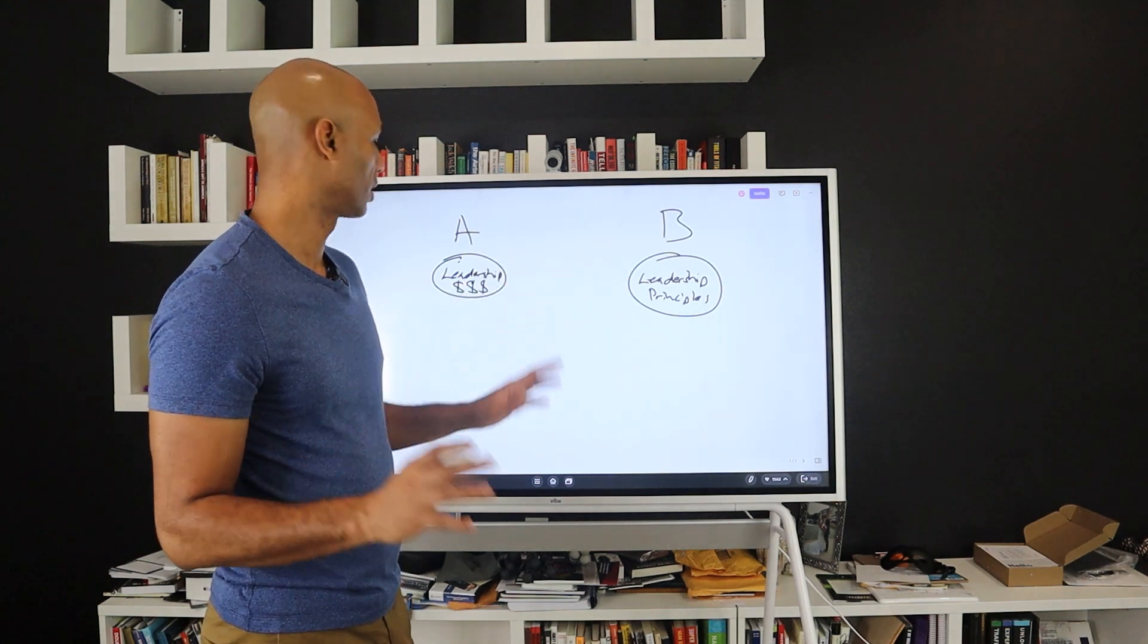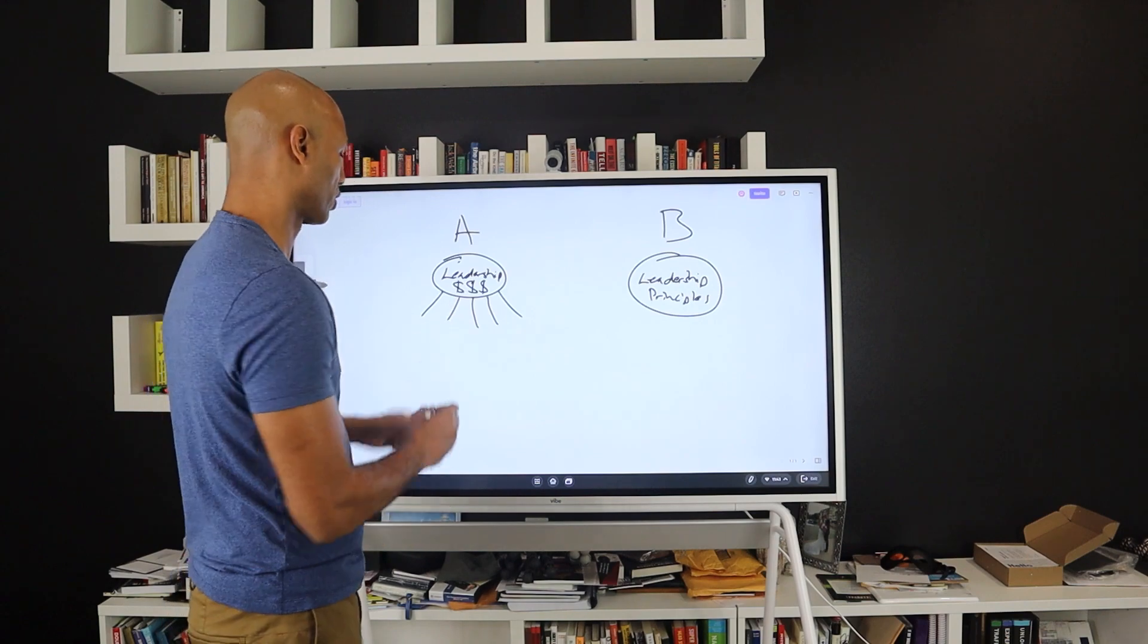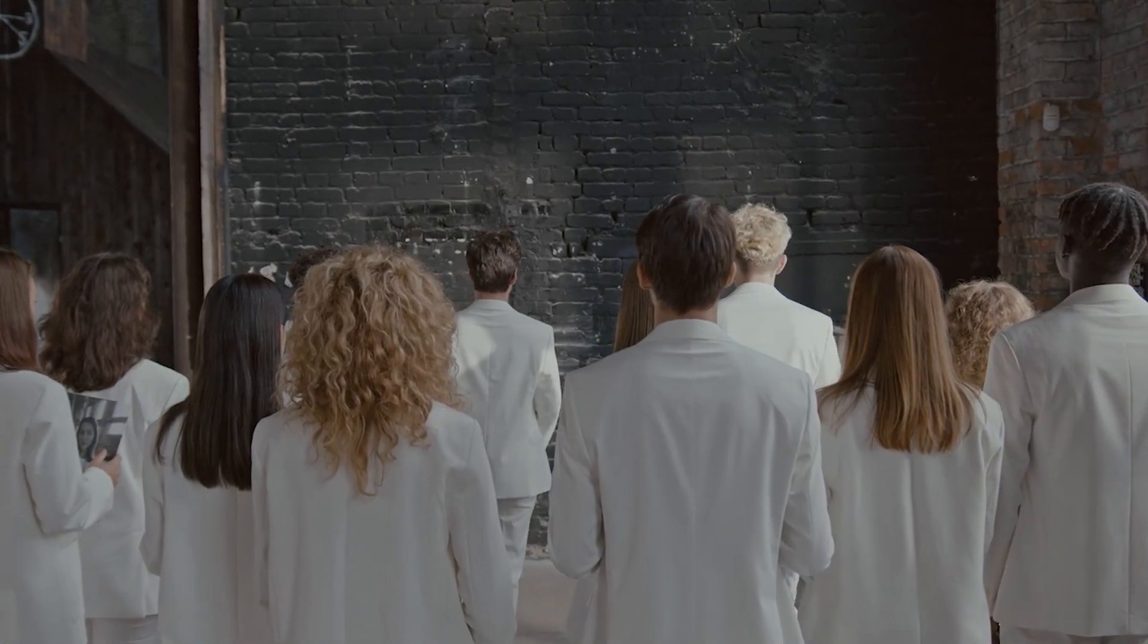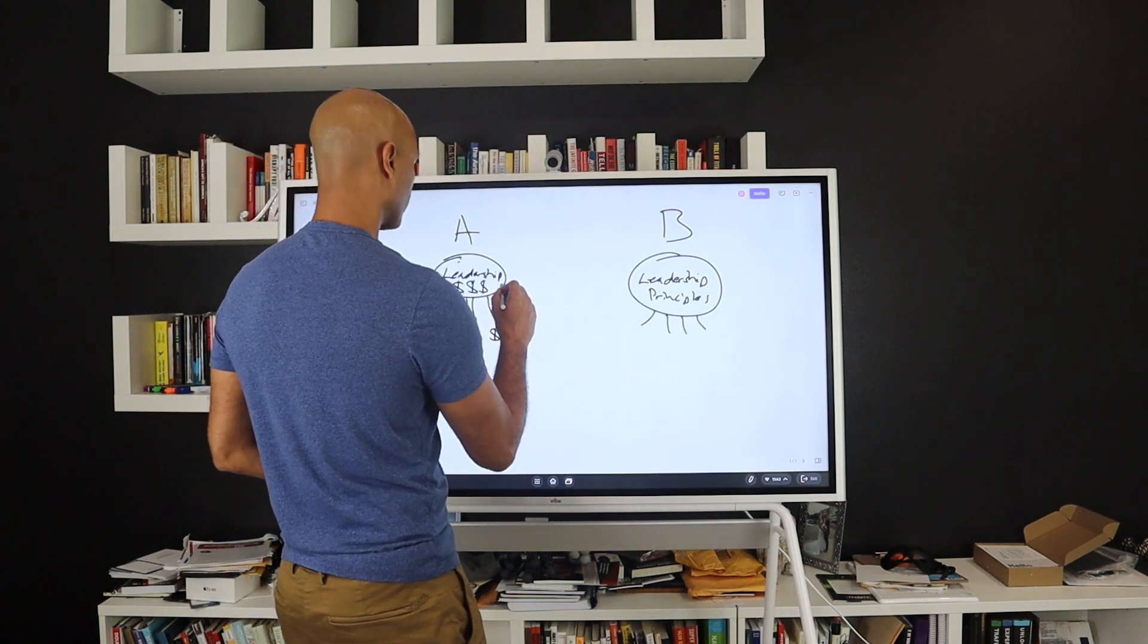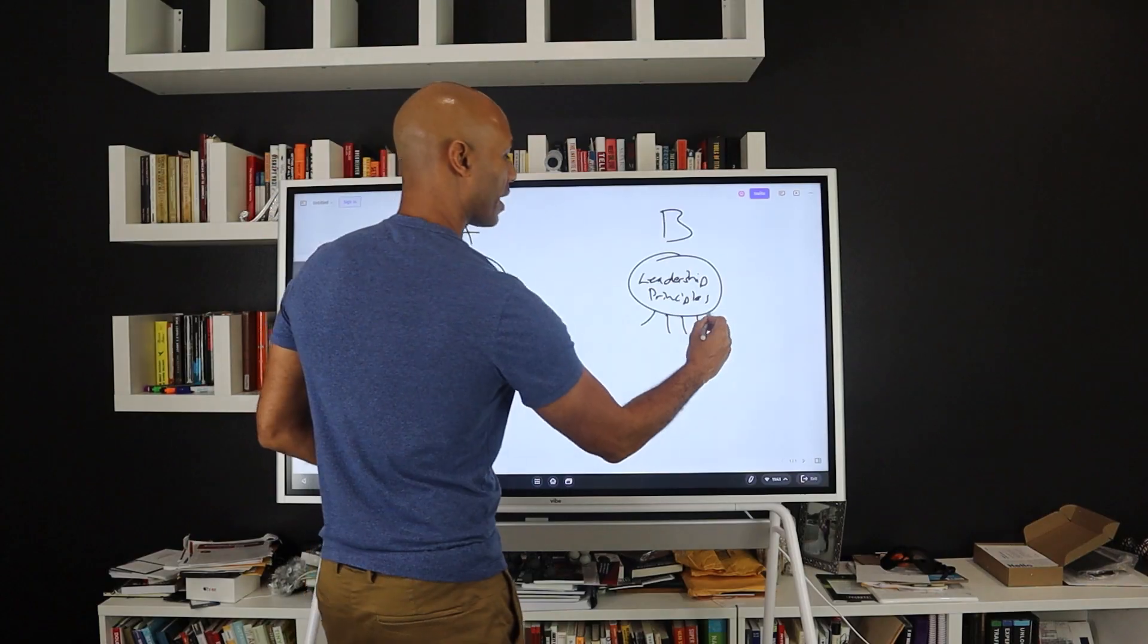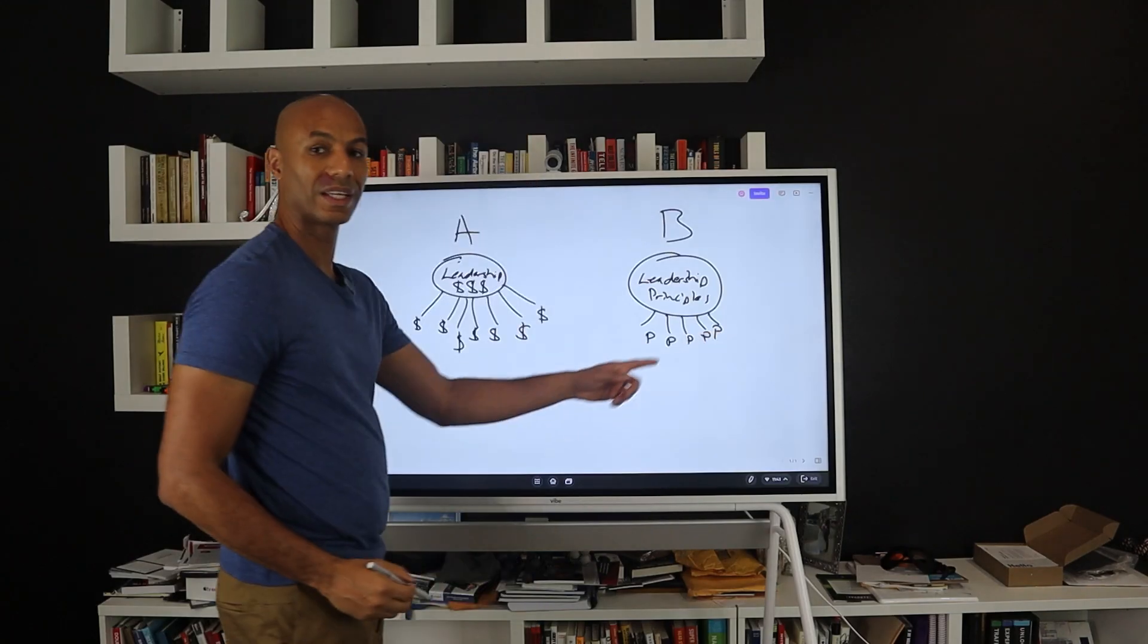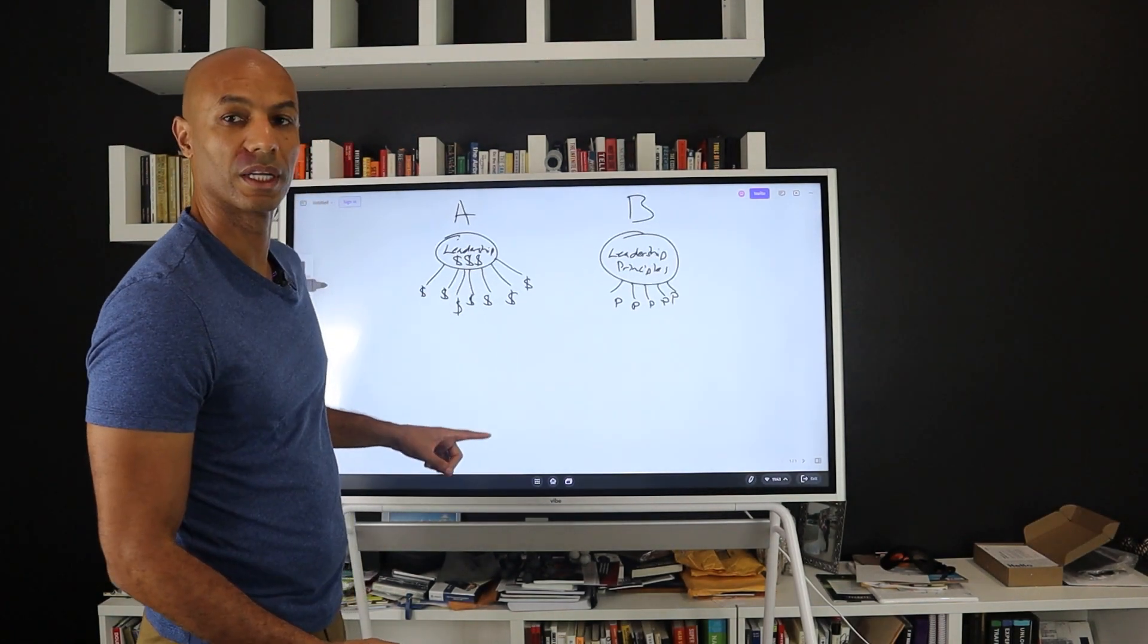Let's say you get a ton of people who are attracted to this group because they want the bling bling, they want the money. Over here you may not get as many people. You get way more people over here and a few people over here. This stands on principles. This group, all they see is money.